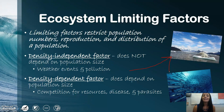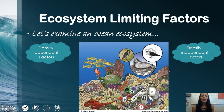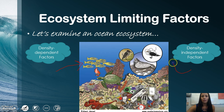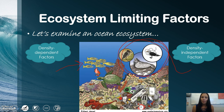Density dependent factors depend on population size. When you have large populations, they're competing for resources, diseases spread faster through the populations, and you also have parasites. Looking at the ocean ecosystem image, a school of fish represents density dependent factors — they compete for resources and disease can spread. The pollution shown in the image represents density independent factors, happening regardless of how many animals are in that population.